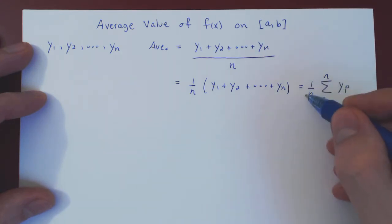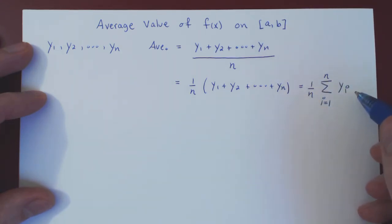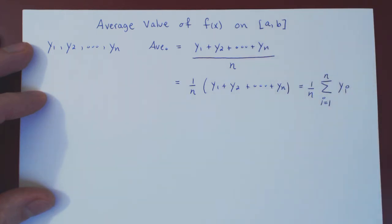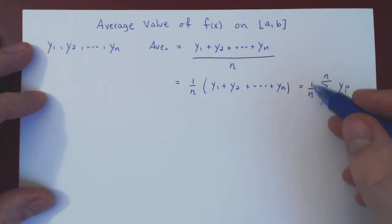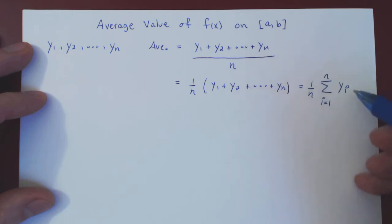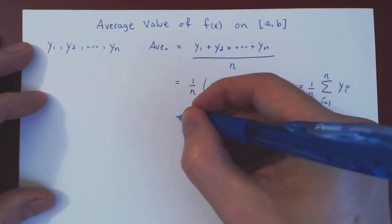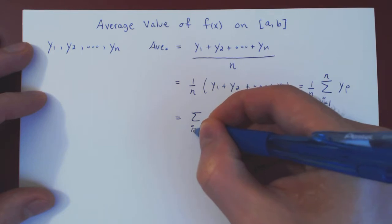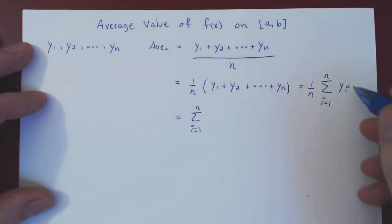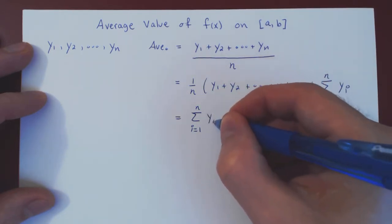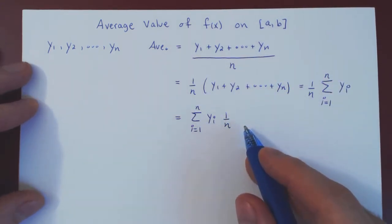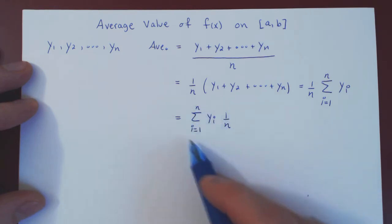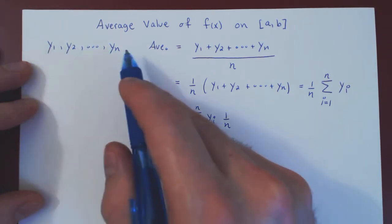Now I'll bring the 1 over n inside the summation. With respect to i, 1 over n is a constant, so we can move it inside. We have the summation as i goes from 1 to n of yi times 1 over n. This is the formula for the average value of n real numbers.